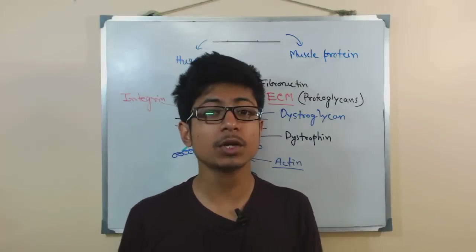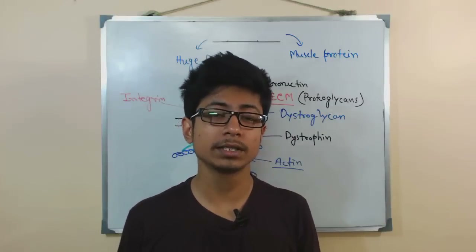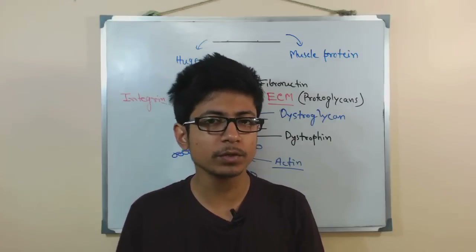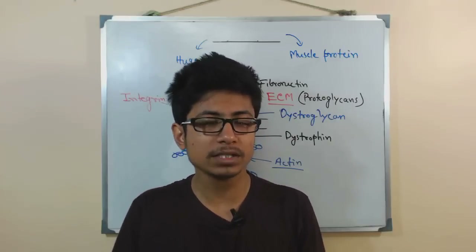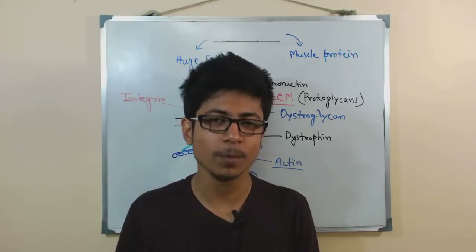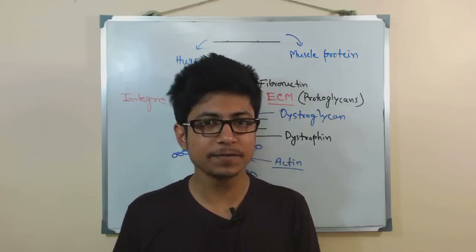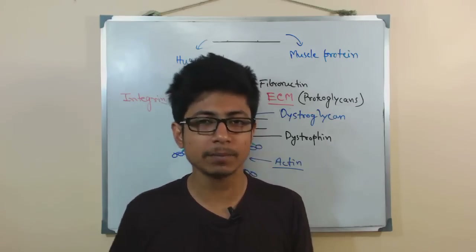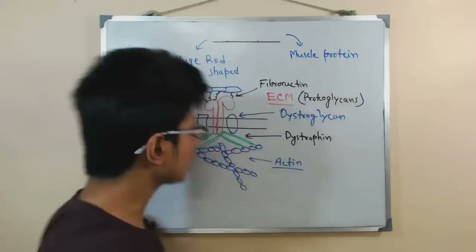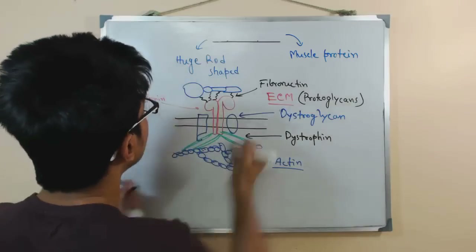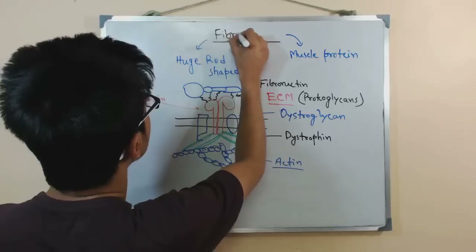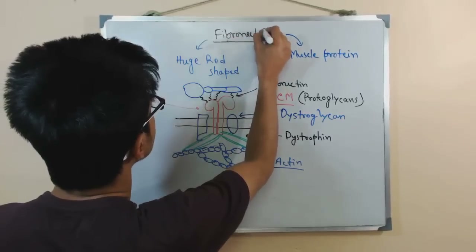Welcome back. We have just talked about the dystrophin protein and its relation to muscular dystrophy. If you have not watched that video, go back and watch it — it will be helpful. In this video, we are also talking about another muscular protein called fibronectin.